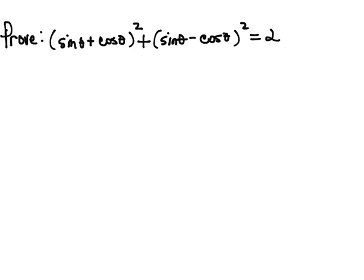In this example we want to prove that (sine plus cosine) squared plus (sine minus cosine) squared is equal to 2.